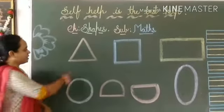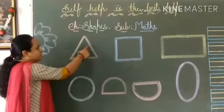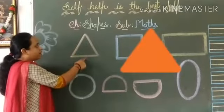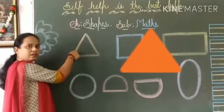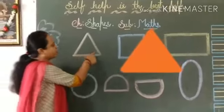Our first shape is a triangle. A triangle has three sides and three corners.